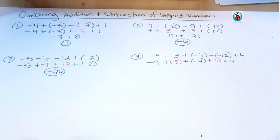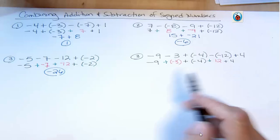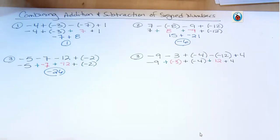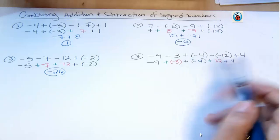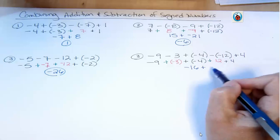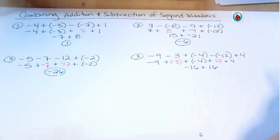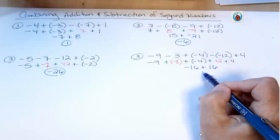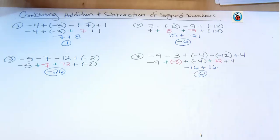And now I'm ready to combine my negatives and my positives. What I have for negatives is negative 9, negative 3, and negative 4. So I have negative 16. Then I combine my positives. 12 and 4 is positive 16. 16 and negative 16 are opposites. And whenever I add opposites, I get 0. So the answer of that one is 0.